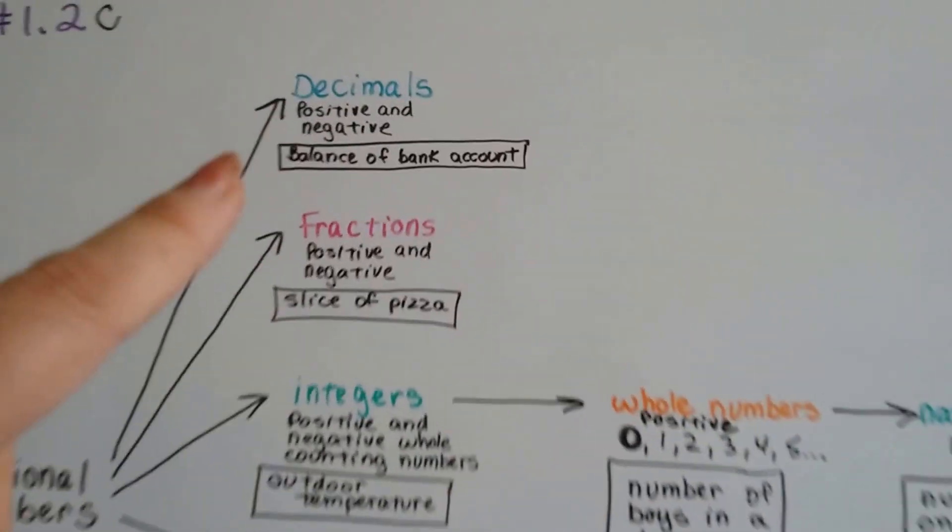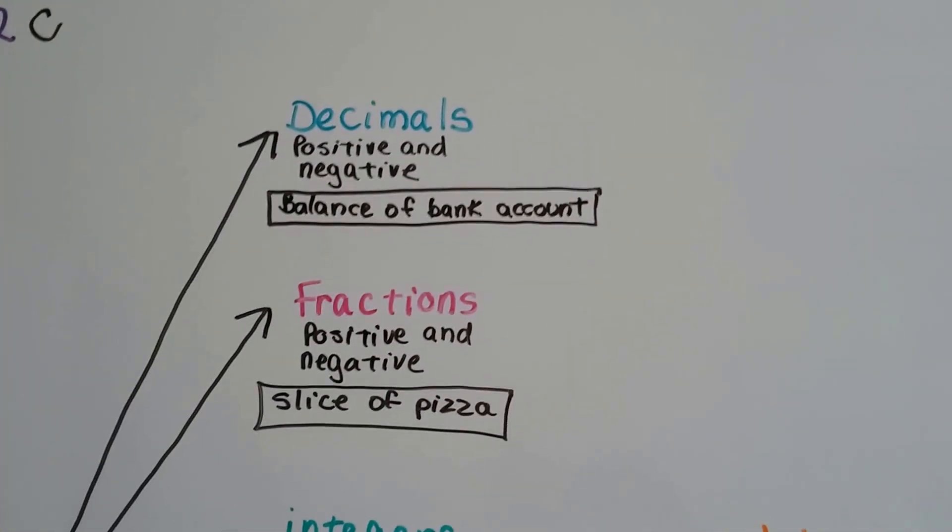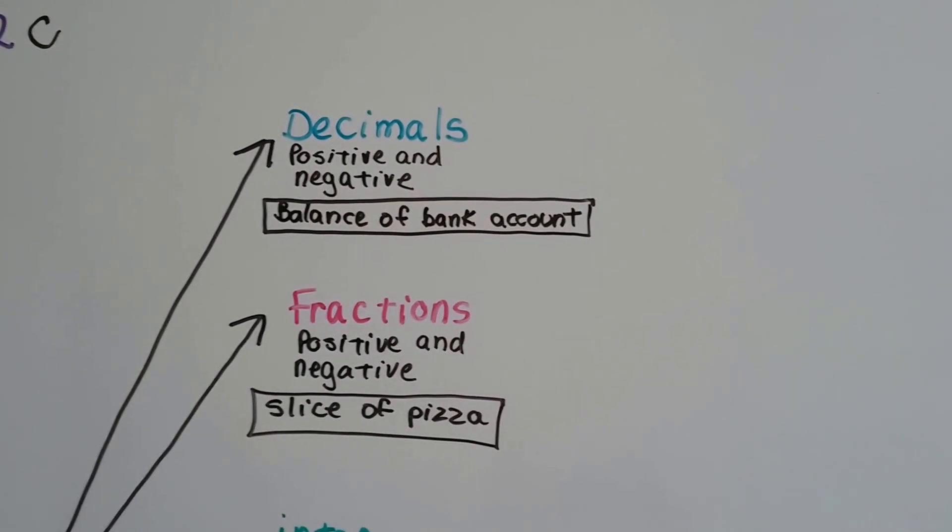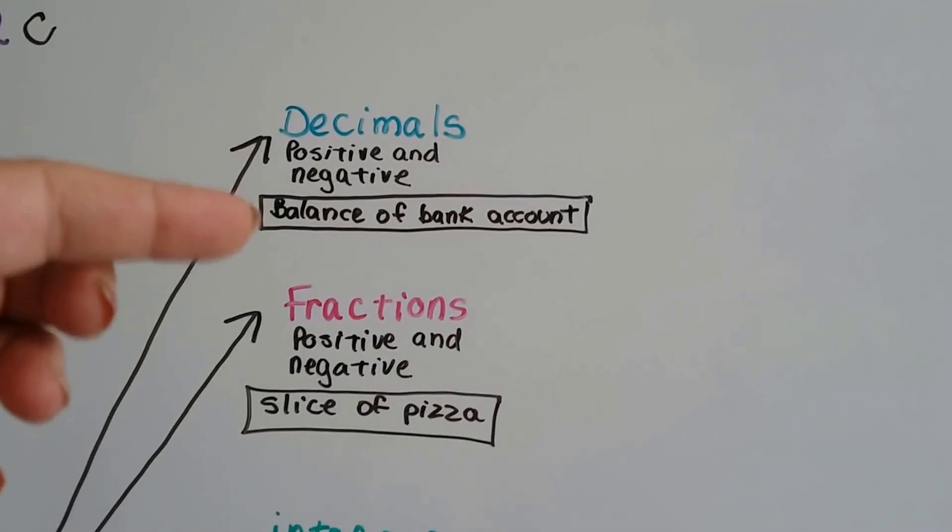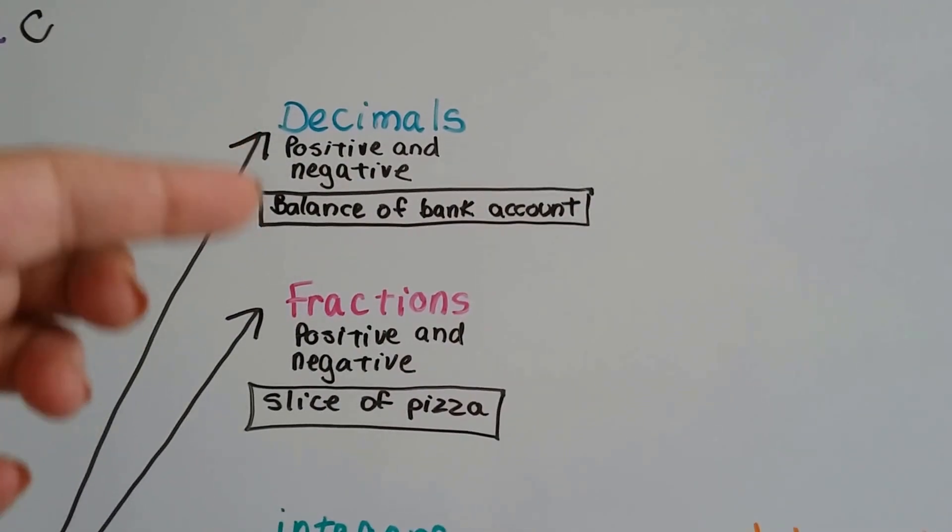The decimals are positive or negative. It would be like the balance of a bank account when you deposit or withdraw money. You'd have positive or negative decimals for that bank account.